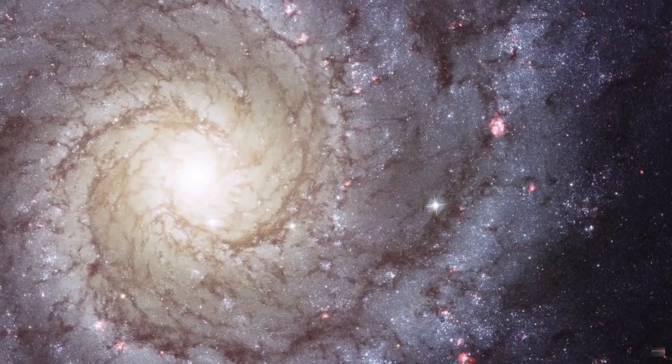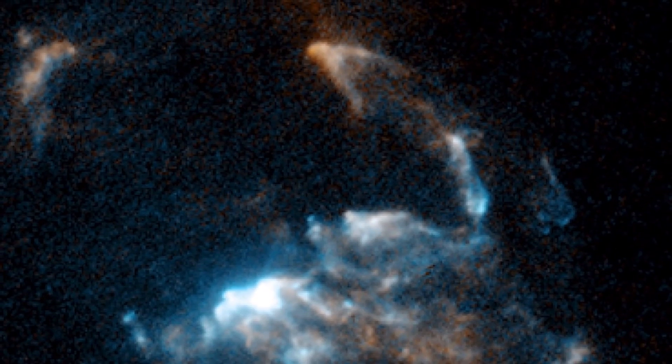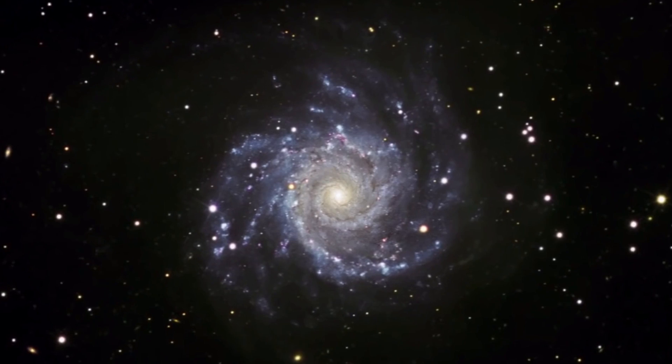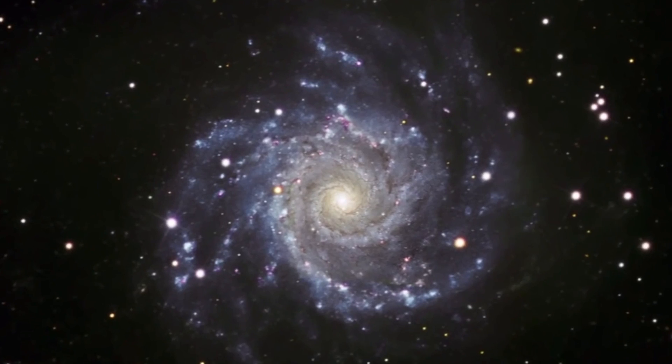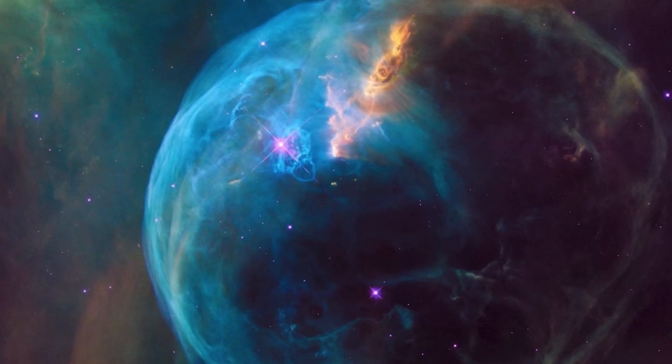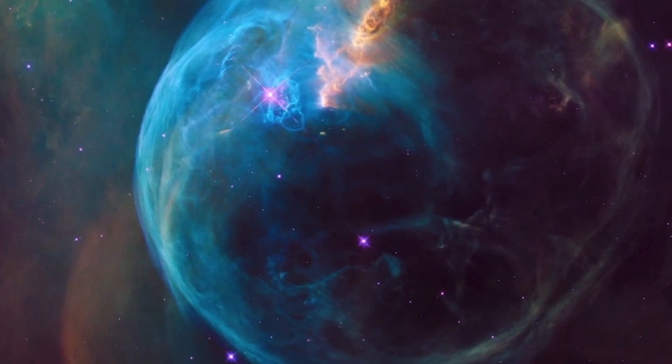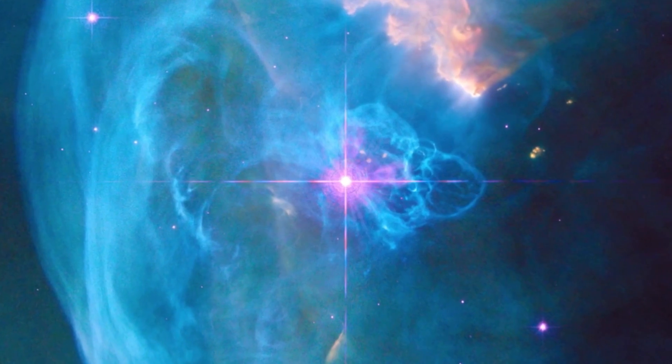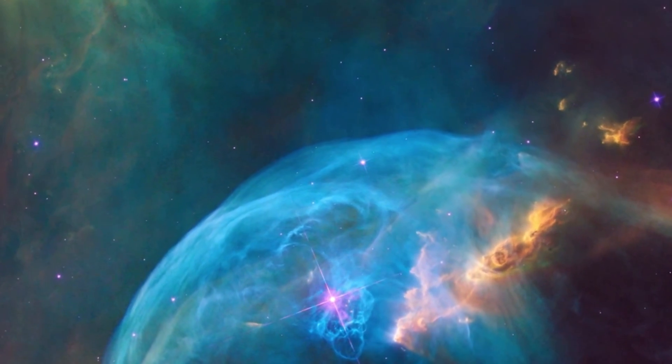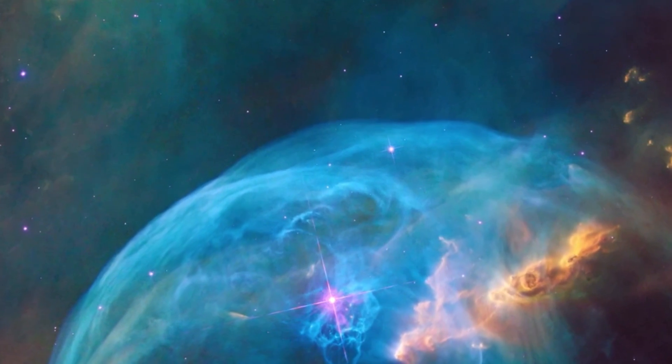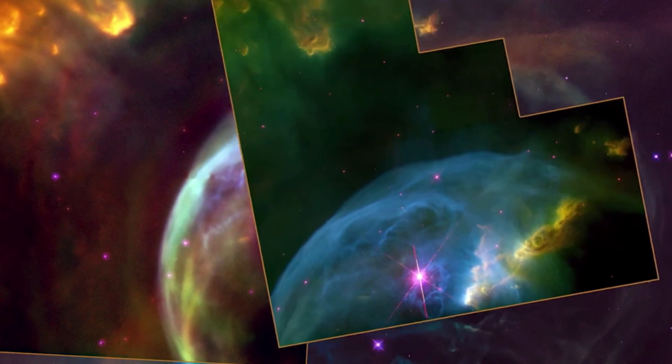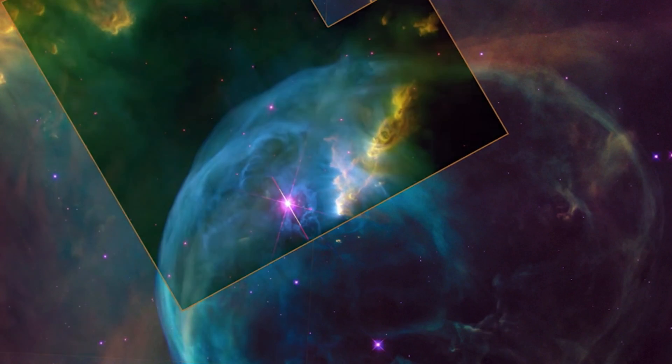This is not the only mesmerizing bubble nebula captured by Hubble. At the 26th anniversary of Hubble, astronomers captured a breathtaking and majestic view of the bubble nebula. The gigantic bubble, also known as NGC 7635, is a 10-light-year-wide cloud of gas and dust in the constellation Cassiopeia. It was discovered in 1787 by William Herschel and has previously been shot in part by Hubble, but this was the first time the telescope has captured it in its entirety in a single image.